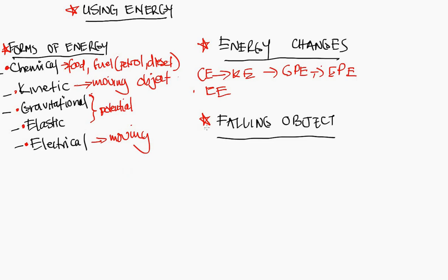We've looked at forms of energy and we've looked at energy changes. Now it's time to look at a falling object. A falling object possesses gravitational potential energy, but as it is falling some of the energy is converted into kinetic energy.